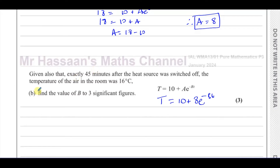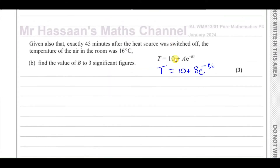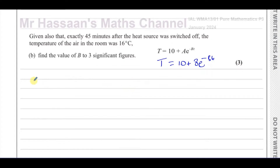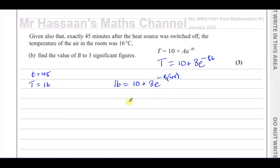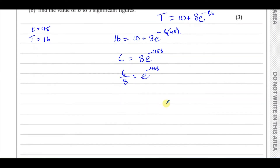Given also that exactly 45 minutes after the heat source was switched off the temperature was 16 degrees Celsius, we have small t = 45 and capital T = 16. Substituting: 16 = 10 + 8e^(-45b). This gives 6 = 8e^(-45b), so 6/8 = e^(-45b), which simplifies to e^(-45b) = 3/4.